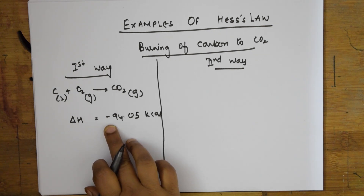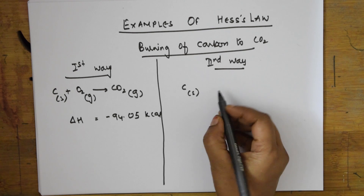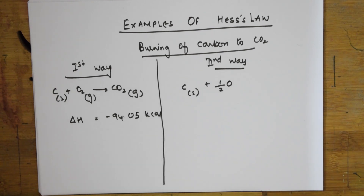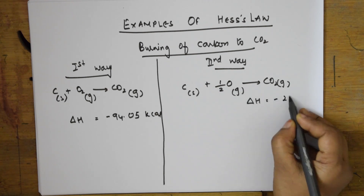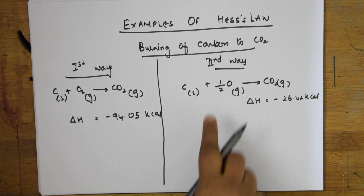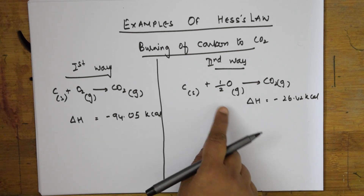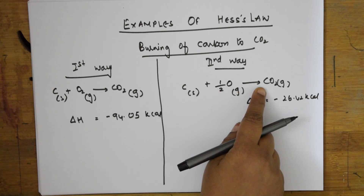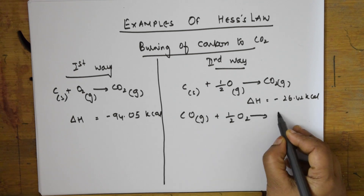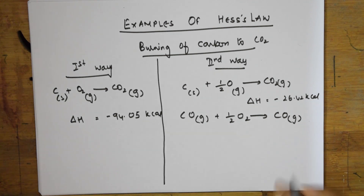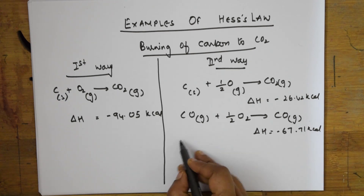In the step-by-step pathway, first carbon (solid) combines with oxygen (gas) to form carbon monoxide (gas), releasing −26.42 kcal. Then in the second step, carbon monoxide (gas) combines with half a mole of oxygen to form carbon dioxide, releasing −67.71 kcal.